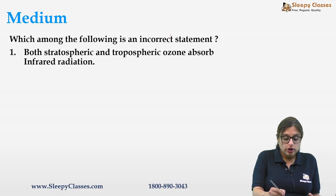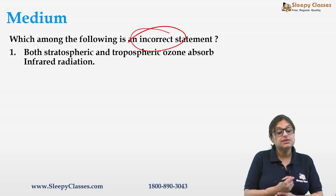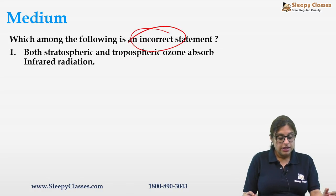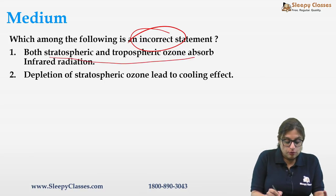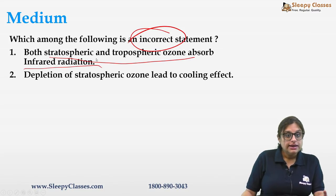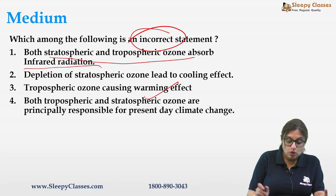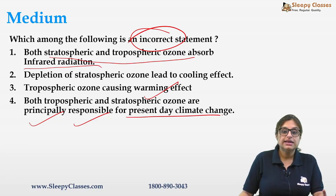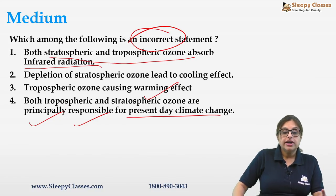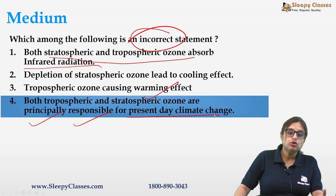The next question asks for the incorrect statement. This is important: don't miss that it asks for incorrect, not correct. Both stratospheric and tropospheric ozone absorb IR radiation. Depletion of stratospheric ozone leads to a cooling effect. Tropospheric ozone causes a warming effect. The fourth statement — that both tropospheric and stratospheric ozone are principally responsible for present-day climate change — is incorrect.